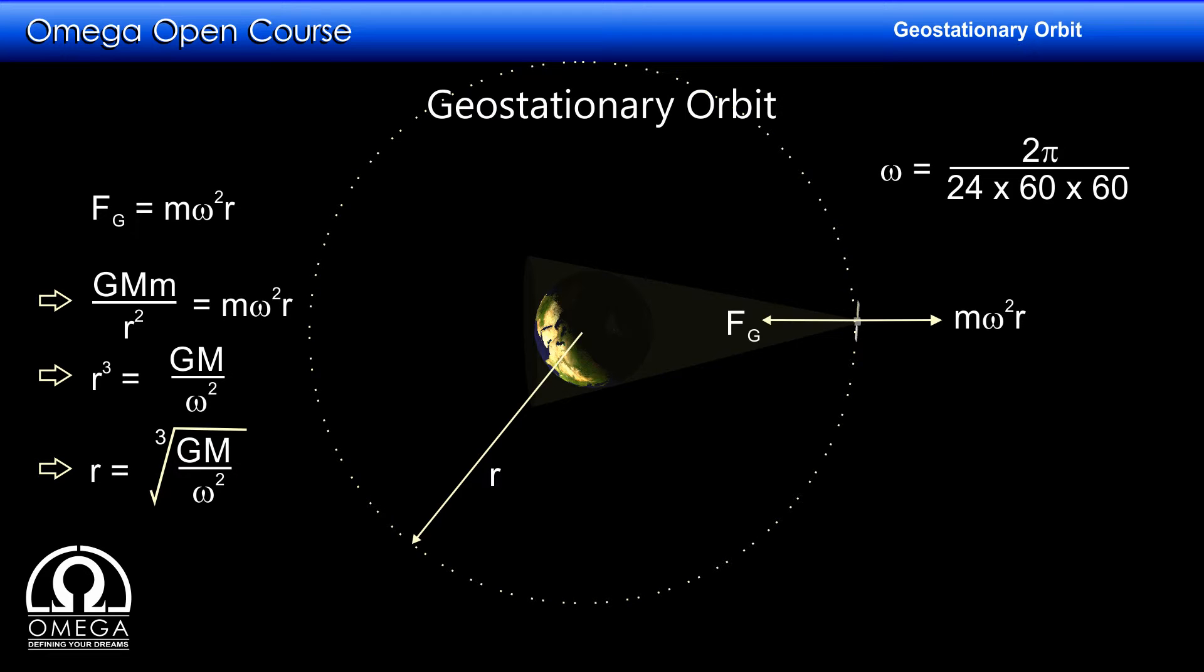Putting this value and the values of the gravitational constant G and the mass of the Earth, the radius comes out to be 42,162 km or approximately 42,000 km.